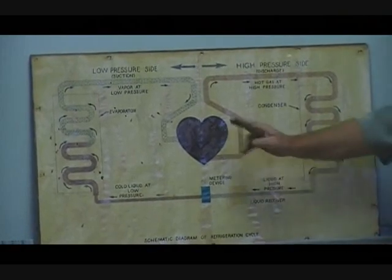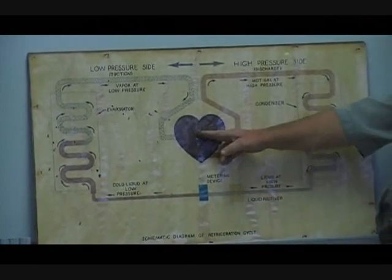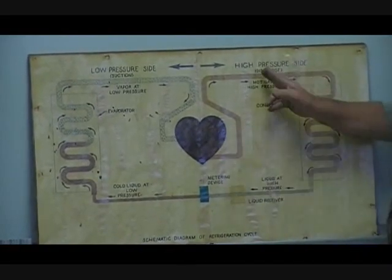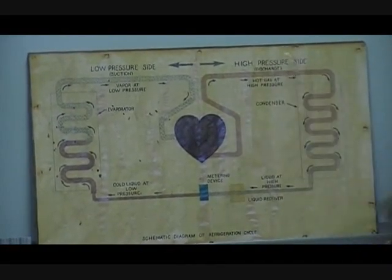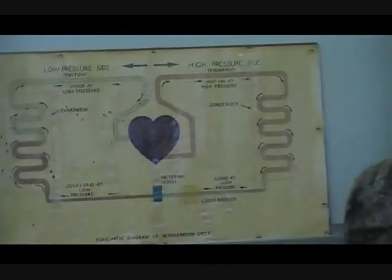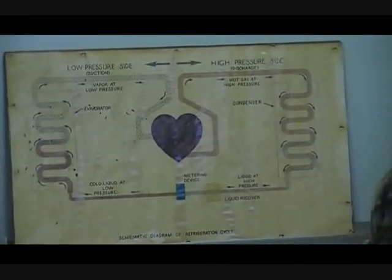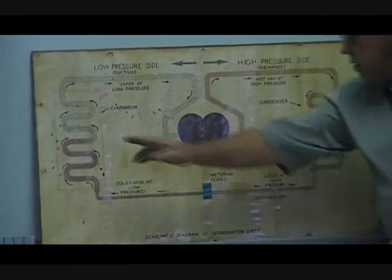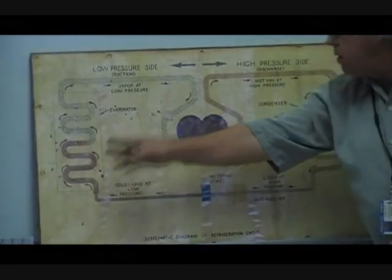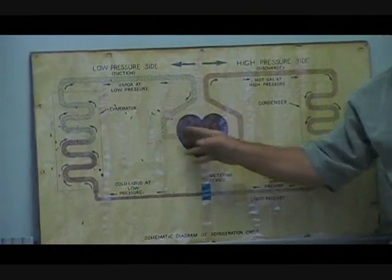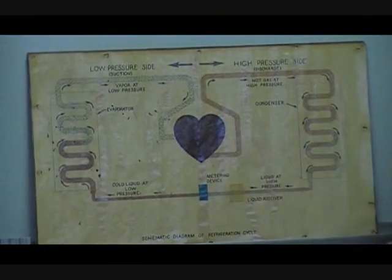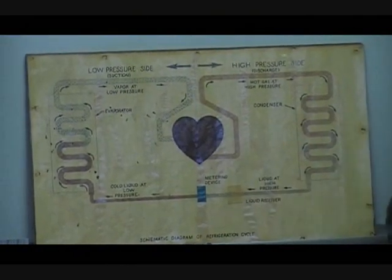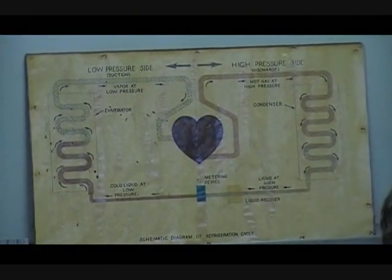So the components are: the compressor, discharge line, condenser, liquid line, metering device, evaporator, and suction line. Six. How many did you get? Six.